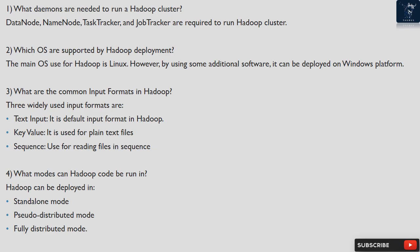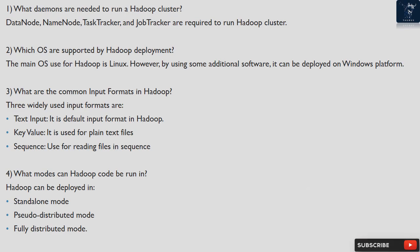However, by using some additional software, Hadoop can also be deployed on a Windows platform. Question 3: What are the common input formats in Hadoop? Three widely used input formats are: text input, which is the default input format in Hadoop; key-value, used for plain text files; and sequence, used for reading files in sequence. Question 4: What modes can Hadoop code be run in? Hadoop can be deployed in standalone mode, pseudo-distributed mode, and fully distributed mode.